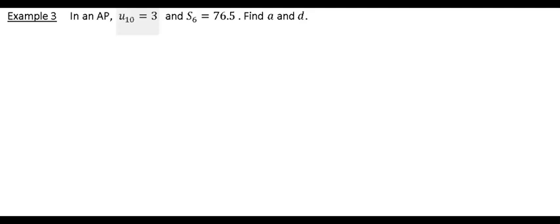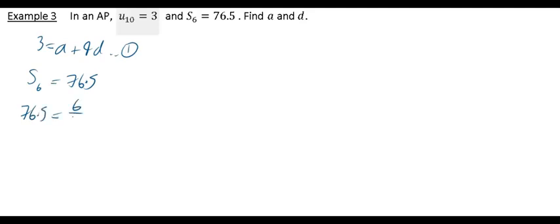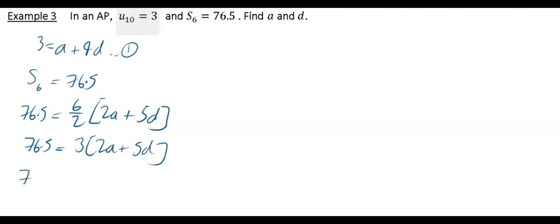Final example: in an AP, U_10 = 3 and S_6 = 76.5. Find A and D. From U_10 = 3: A + 9D = 3 — equation 1. From S_6 = 76.5: 76.5 = 6/2 × (2A + 5D) = 3(2A + 5D), which gives 76.5 = 6A + 15D — equation 2.